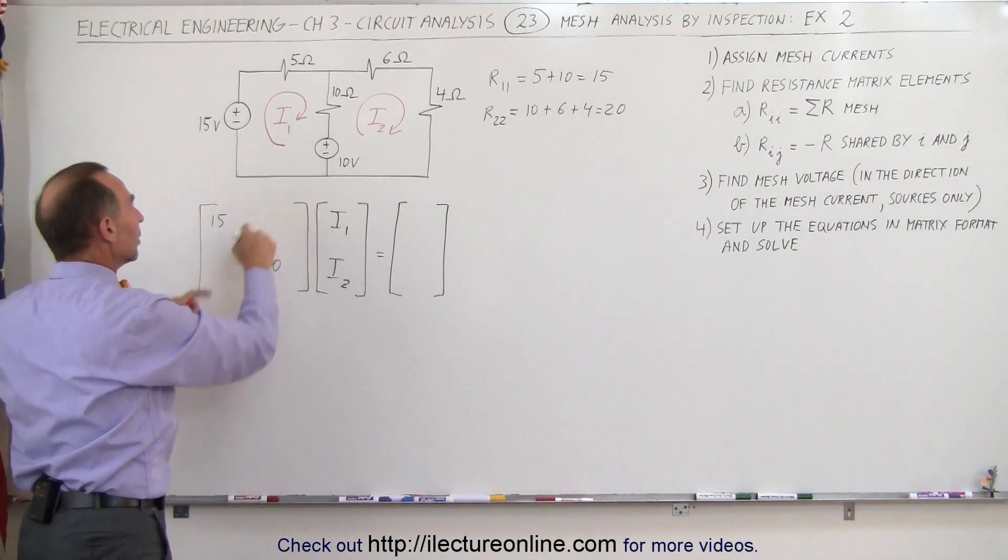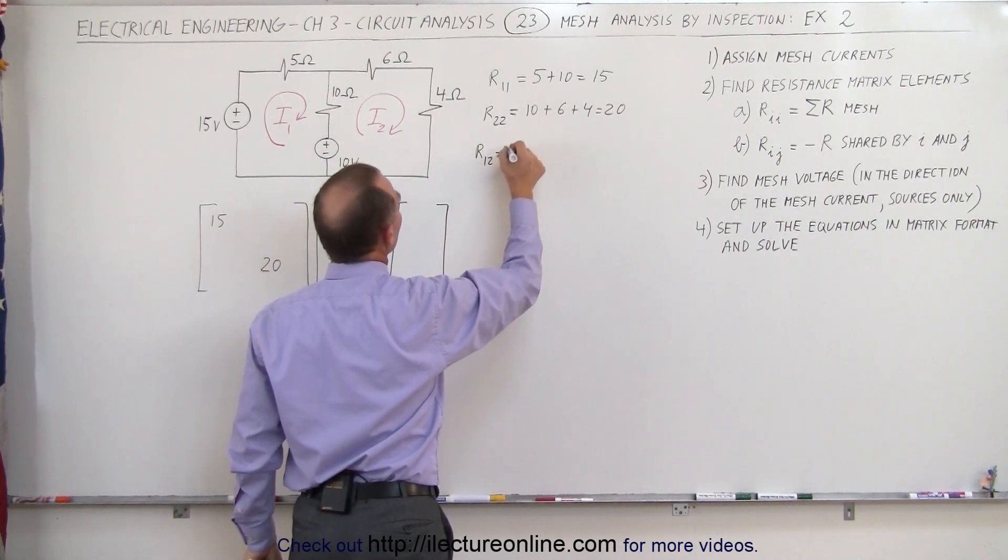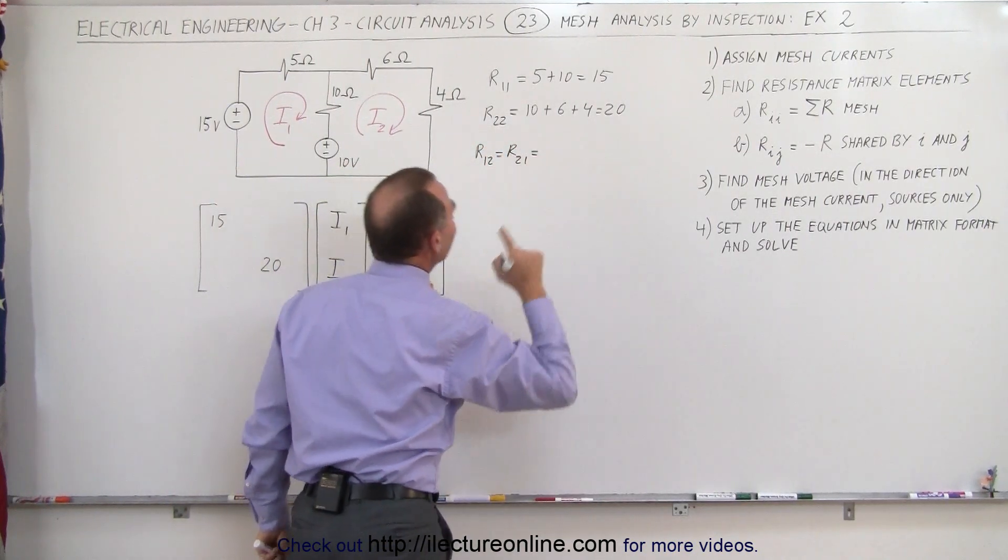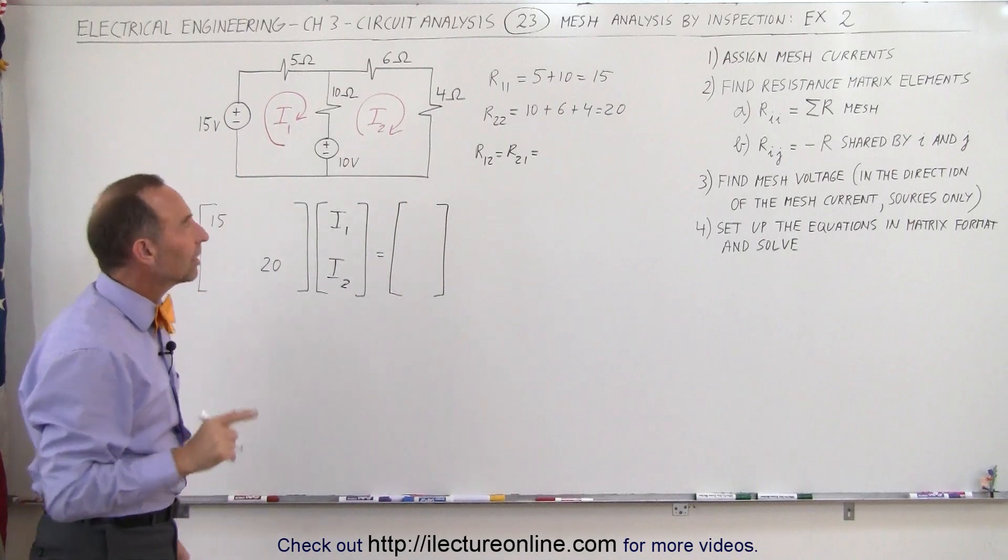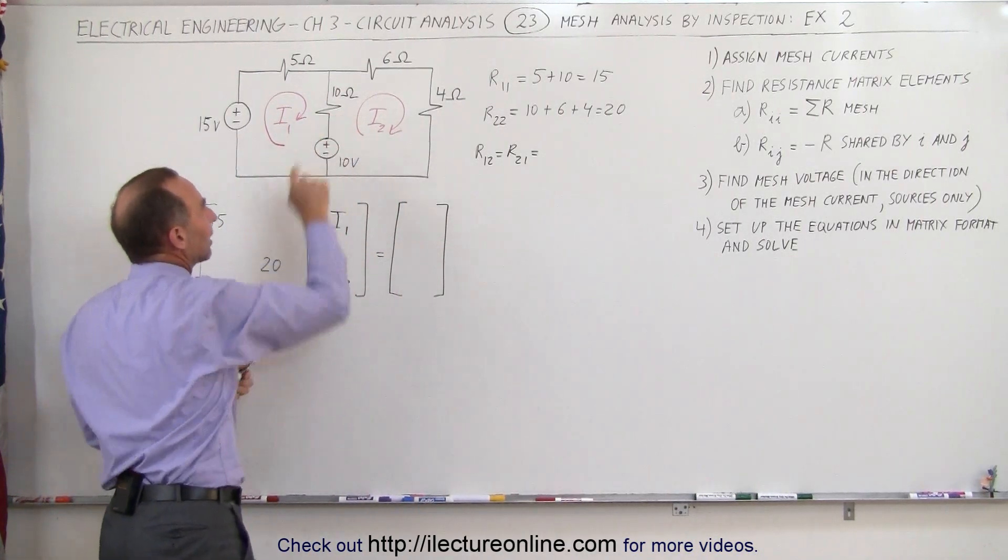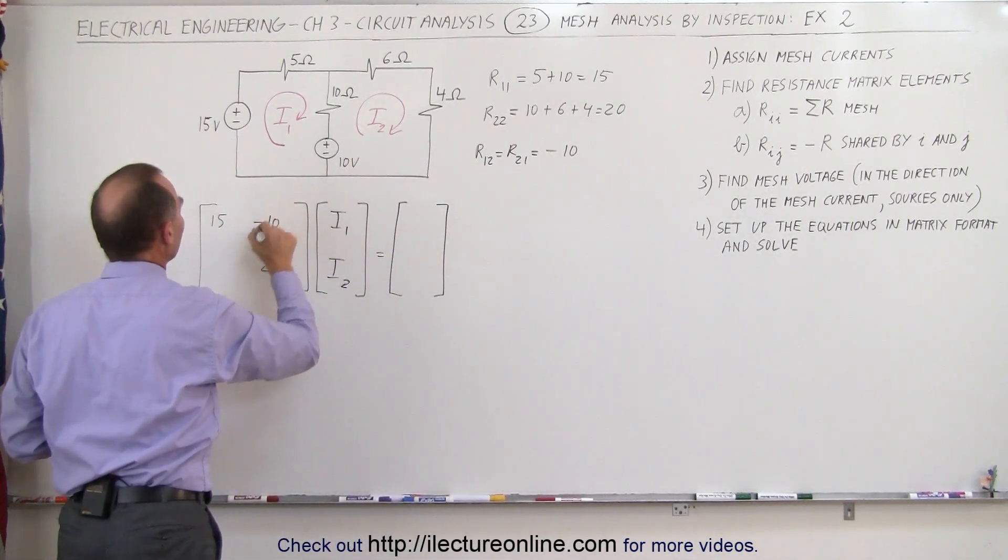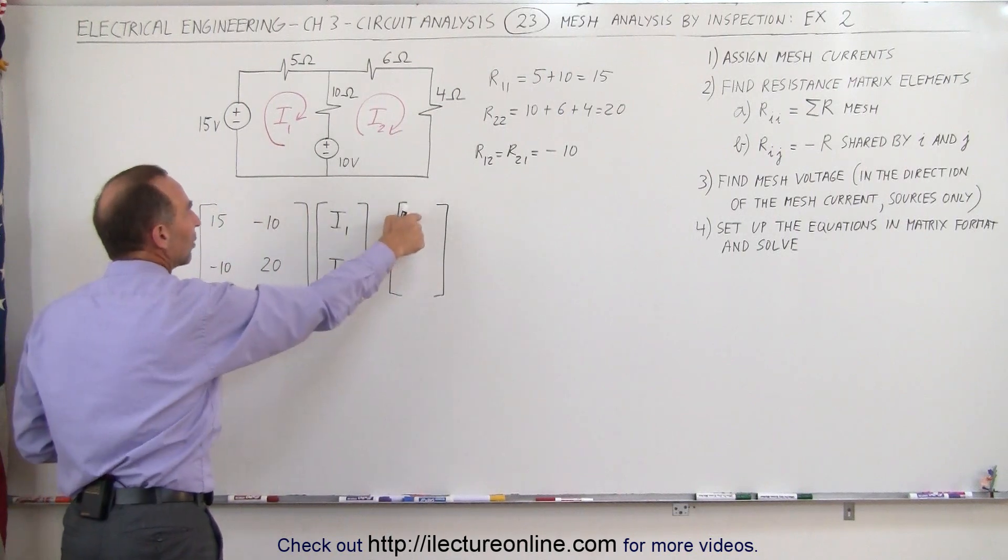For that, we realize that R12 is equal to R21. It is the negative of the resistances that they share. We sum up all the resistances they share. There's only one right here. It's the negative of that value, minus 10, and that goes into these two locations, minus 10 and minus 10.